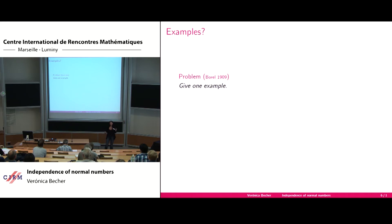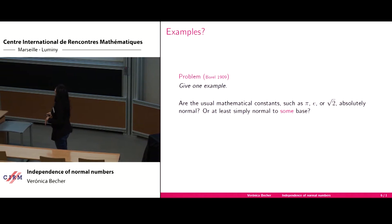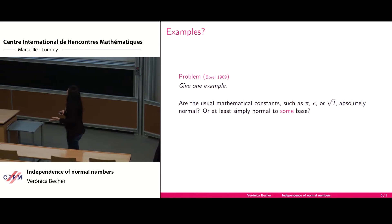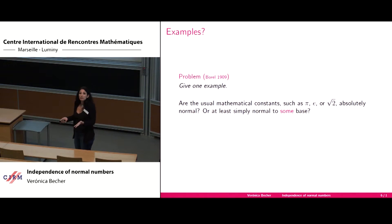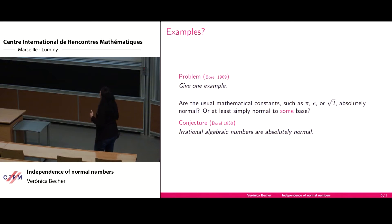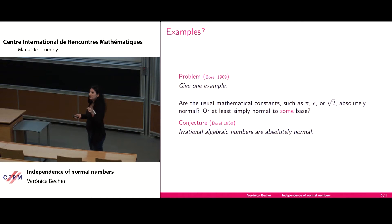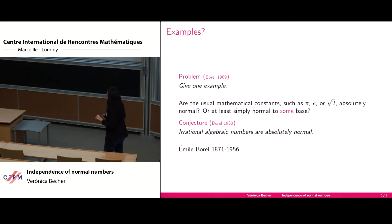Borel knew of the existence and asked for a concrete example — specifically, whether usual mathematical constants like e, π, or √2 are absolutely normal or at least normal to some base. This is still open and is one of the most famous questions about normal numbers. Late in his life, Borel conjectured that all irrational algebraic numbers are normal to every base — he was 80 years old when he made this conjecture.